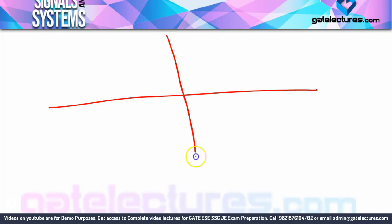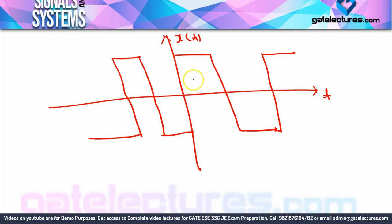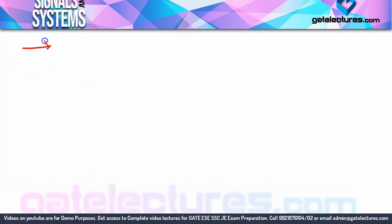Let me give you an example of a periodic signal. You can see here a signal that is repeating again and again. If I show the time axis: 0, 2, 4, -2, -4 - you can see the same pattern at 0 and at 4. One cycle is completed from 0 to 4, then a new cycle starts from 4. So this signal is repeating itself, and the time period T = 4. This is the example of a periodic signal.